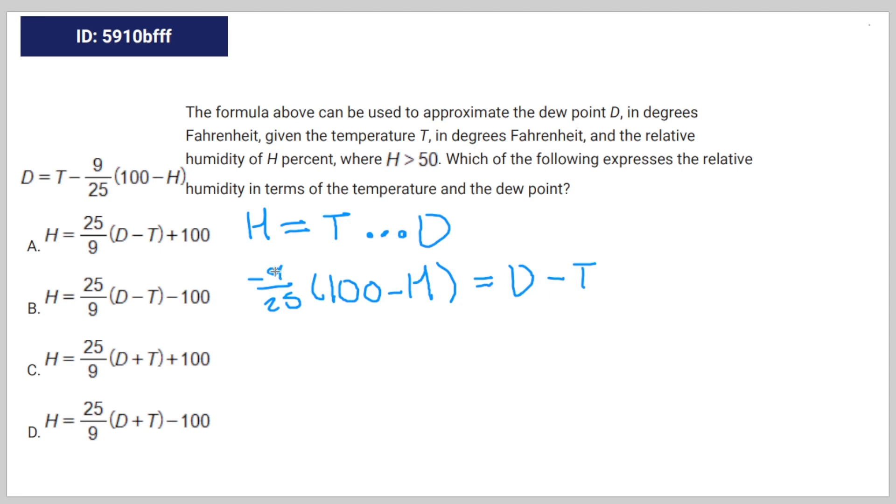Multiply both sides of the equation by negative 25 over 9. You're going to get 100 minus H is equal to negative 25 over 9 times D minus T.